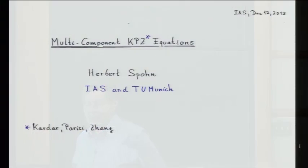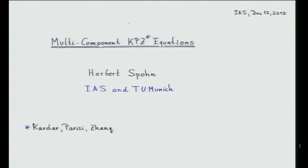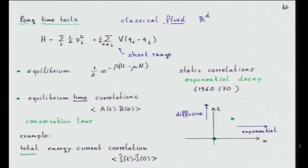Multi-component KPZ equations. We heard a lot about KPZ equations — I'm enjoying this term already. Multi-component actually means something very simple here. It's still the KPZ equation in one dimension, but rather than looking at the scalar equation, I'm going to look at the vector-valued equation. That looks like a natural generalization. Nevertheless, I will spend quite a bit of time explaining why I'm interested in this case, and then tell you a little about what we know. Compared to the scalar equation, the knowledge is basically down to zero, but there's some interesting information.